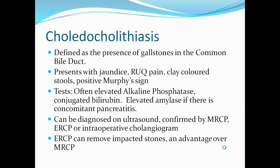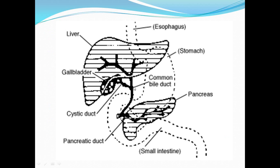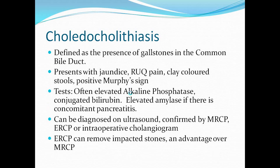Choledocholithiasis is defined as the presence of gallstones in the common bile duct. Referring back to our diagram, the stone comes from the gallbladder and gets lodged in the common bile duct past the cystic duct. The presentation will often involve jaundice, right upper quadrant pain, clay-colored stools, and a positive Murphy's sign.